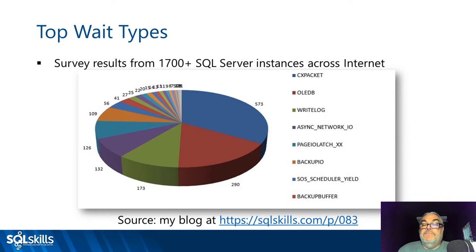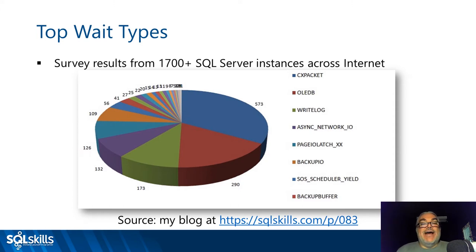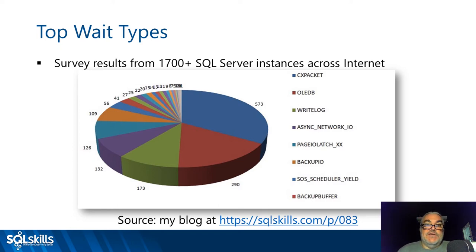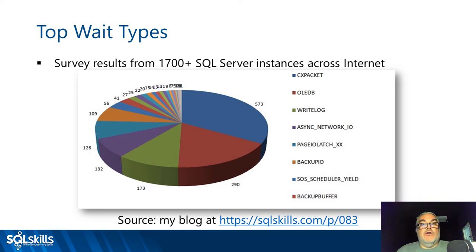SOS_SCHEDULER_YIELD is a special wait type — not really a true wait. A thread running on the processor for its four-millisecond quantum voluntarily gets off the processor and goes directly to the runnable queue. When a context switch occurs, a wait type must be registered, so SOS_SCHEDULER_YIELD is recorded. Some internet advice says this always means you need more CPUs — no, it depends. It could just be part of your normal workload, so investigate before acting.